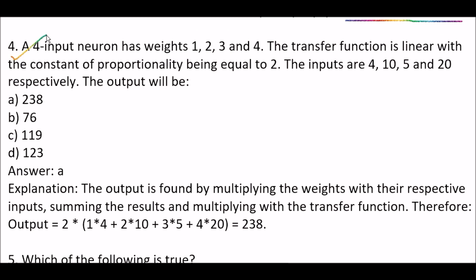Next question: a four-input neuron has weights 1, 2, 3 and 4 respectively. The transfer function is linear with the constant of proportionality equal to 2. The inputs are 4, 10, 5 and 20 respectively. The output will be — Option A: 238, Option B: 76, Option C: 119, Option D: 123.